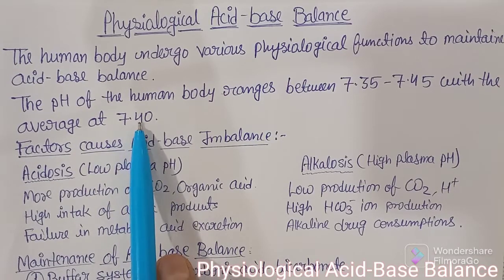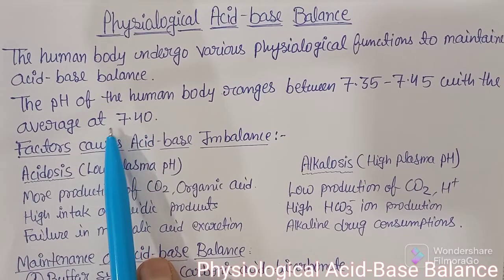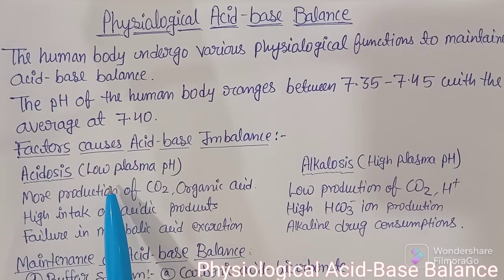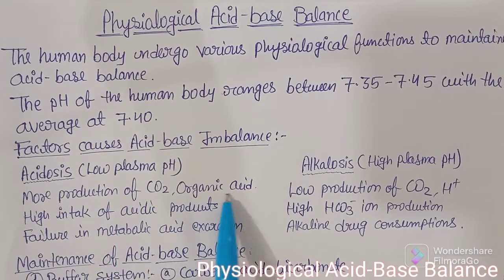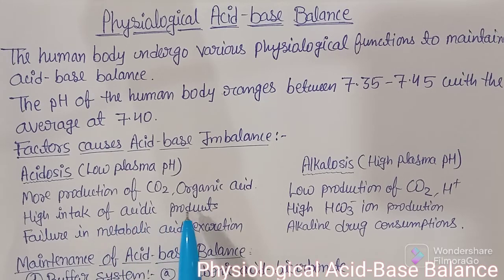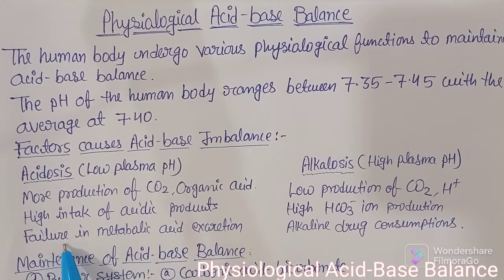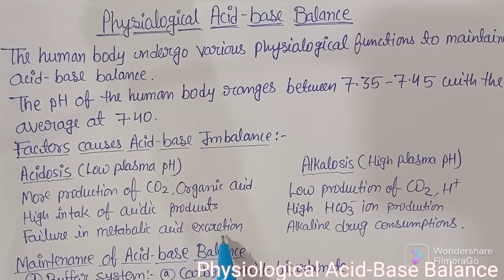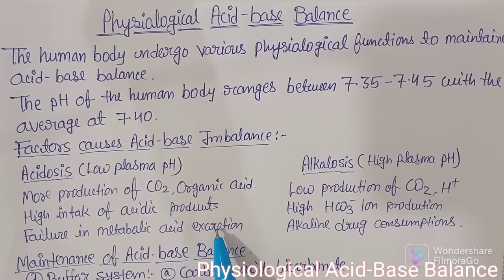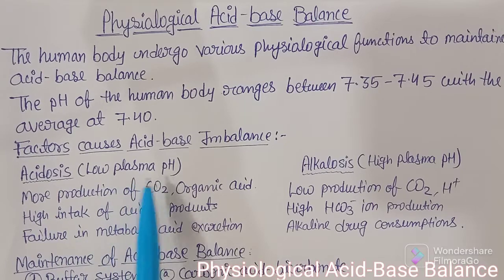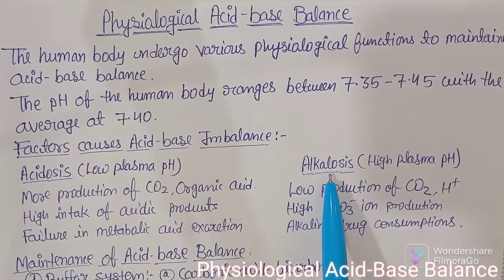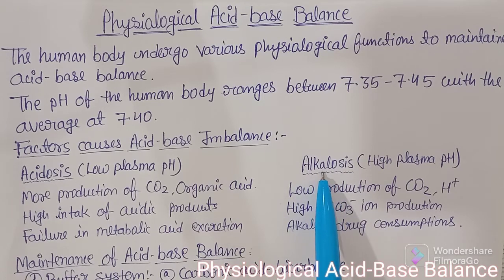Conditions causing acidosis include: more production of carbon dioxide, more production of organic acids, high intake of acidic products (any kind of food or drug), and failure in metabolic acid excretion. Metabolic acid formed during digestion, if not excreted from the body, causes the body to enter acidosis and plasma pH decreases.